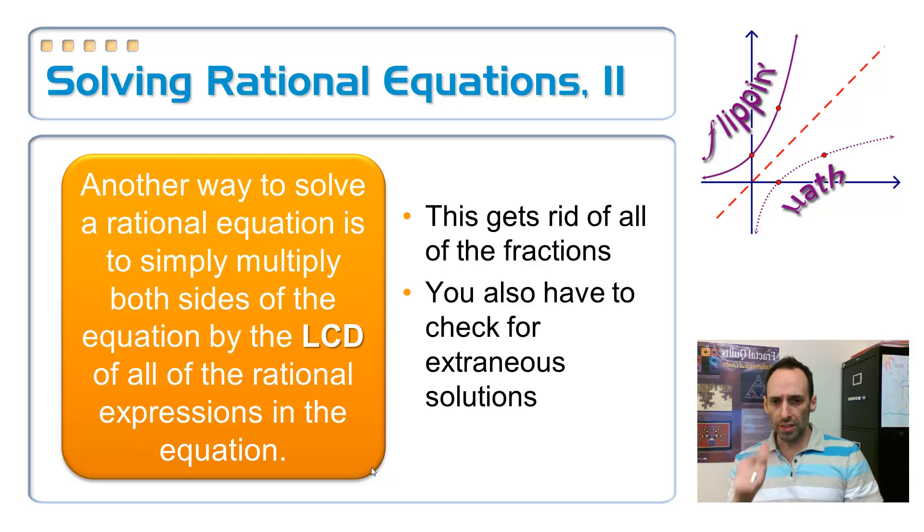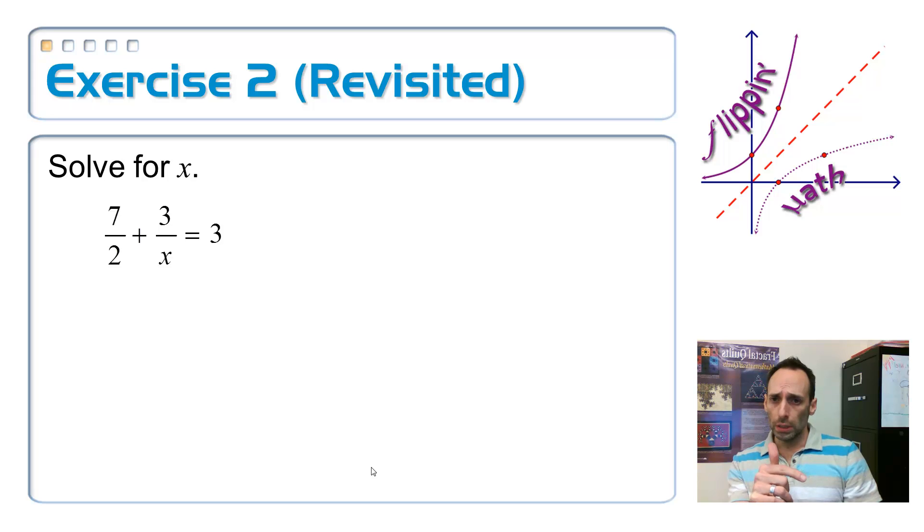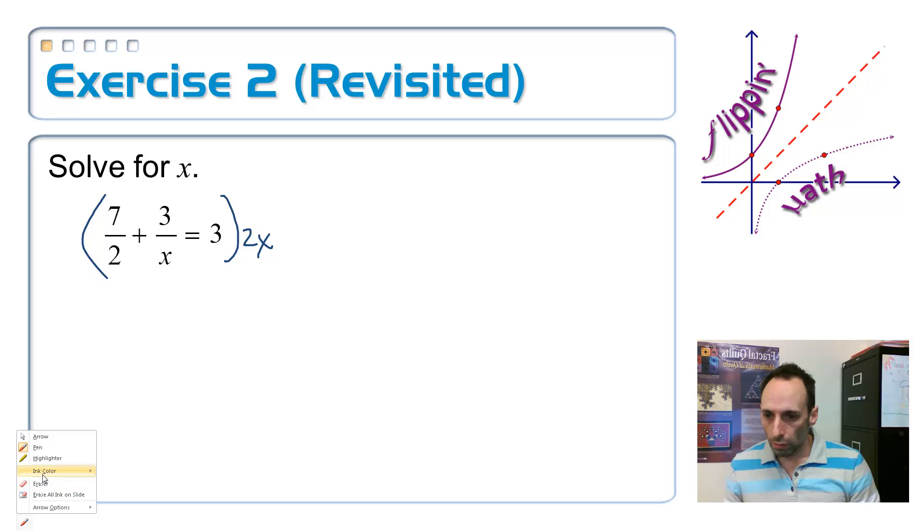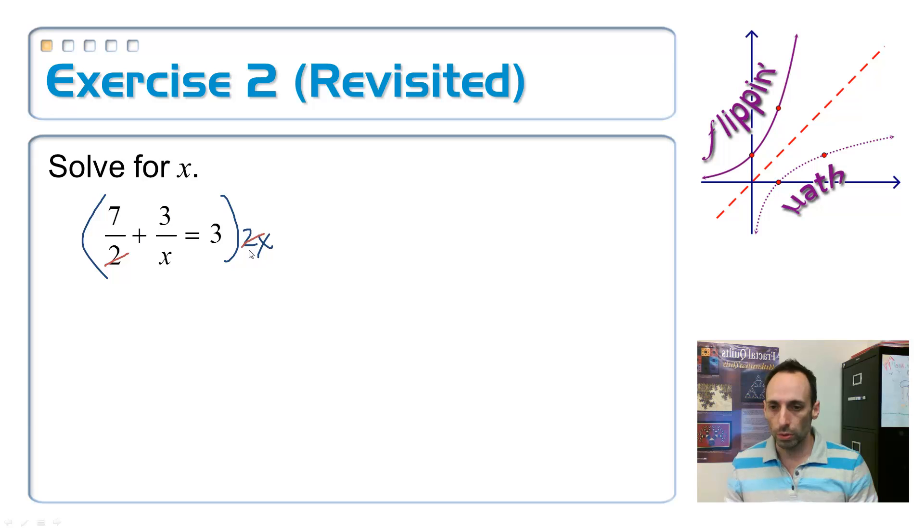So let's try that same problem we just did before, except for multiplying both sides by the least common denominator. So if I remember correctly, the least common denominator here was 2x. It's going to multiply both sides of this by 2x. So if I multiply the left-hand side by 2x, the 2 would cancel out with this 2, and then I'd multiply the 7 times the x, and I'd have 7x.